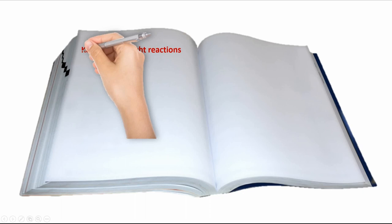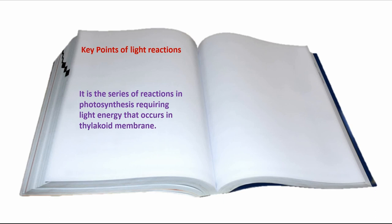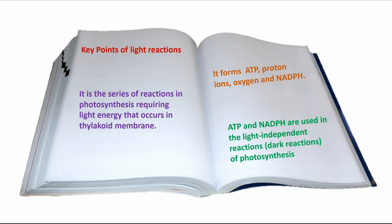Key points of light reactions: it is the series of reactions in photosynthesis requiring light energy that occurs in the thylakoid membrane. It forms ATP, proton ions, oxygen, and NADPH. ATP and NADPH are used in the light independent reactions, or dark reactions, of photosynthesis.